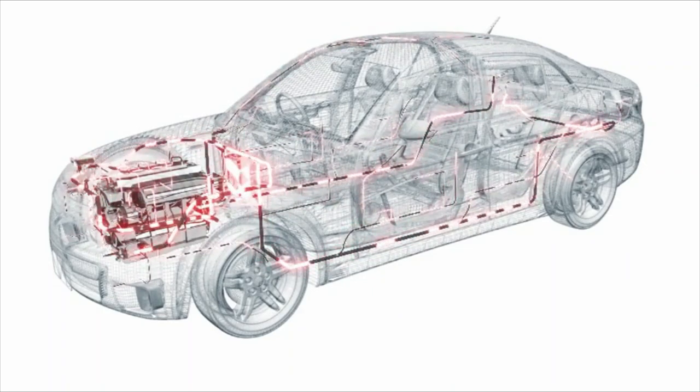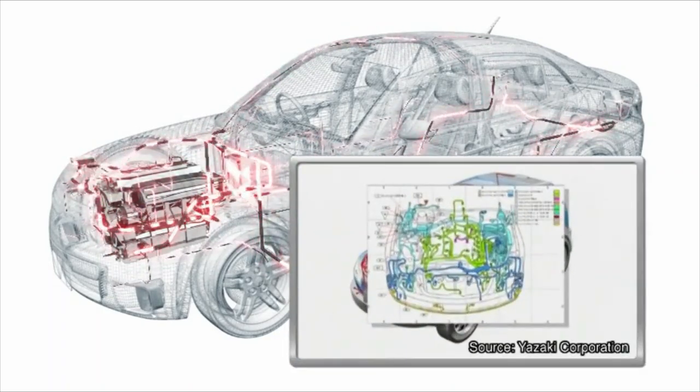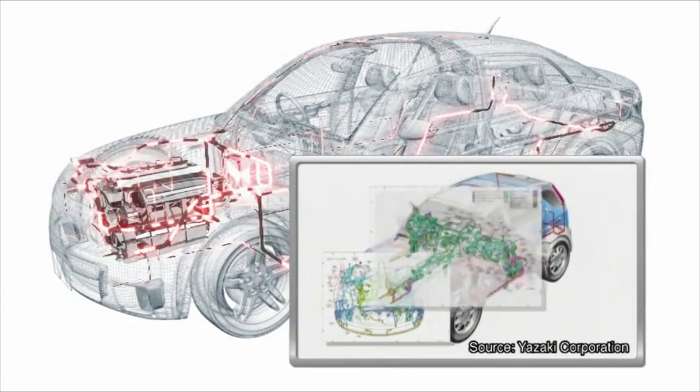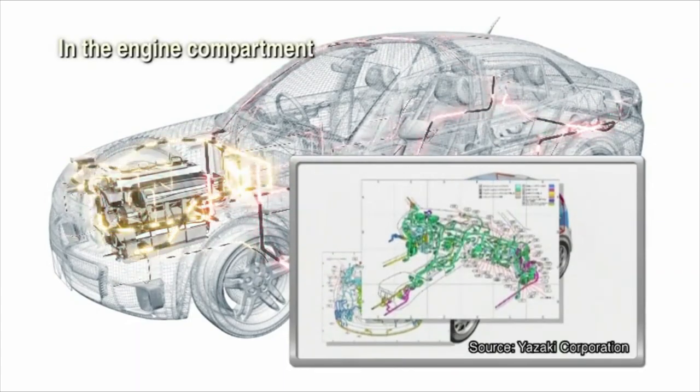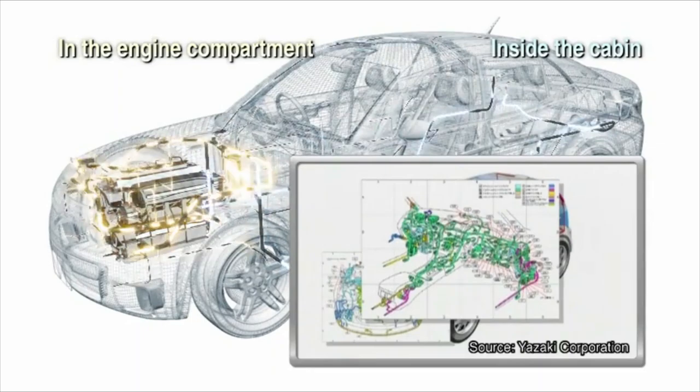Wiring harnesses are essentially a series of cables that are divided into two types, one for the engine compartment and the other for use inside the cabin.